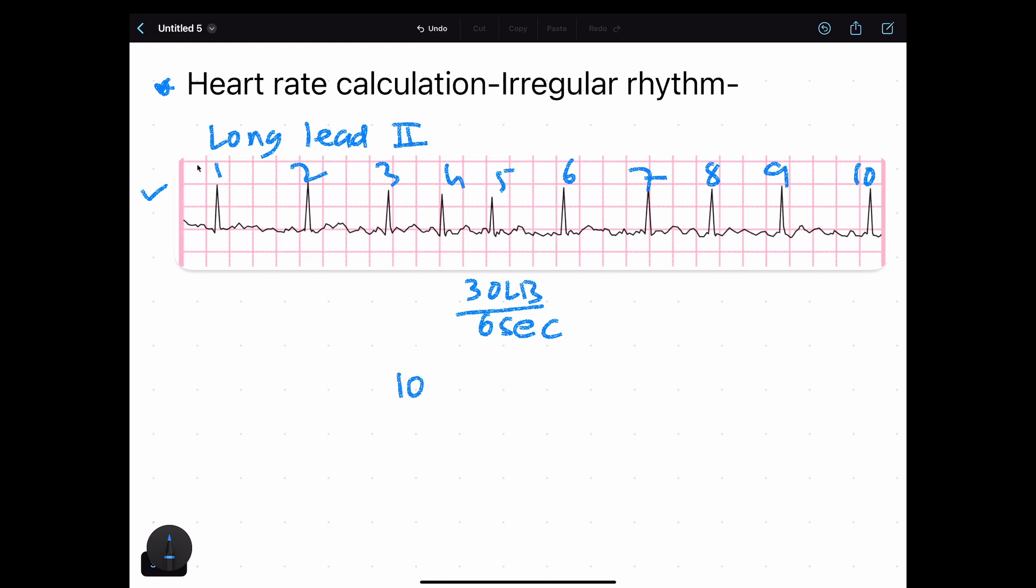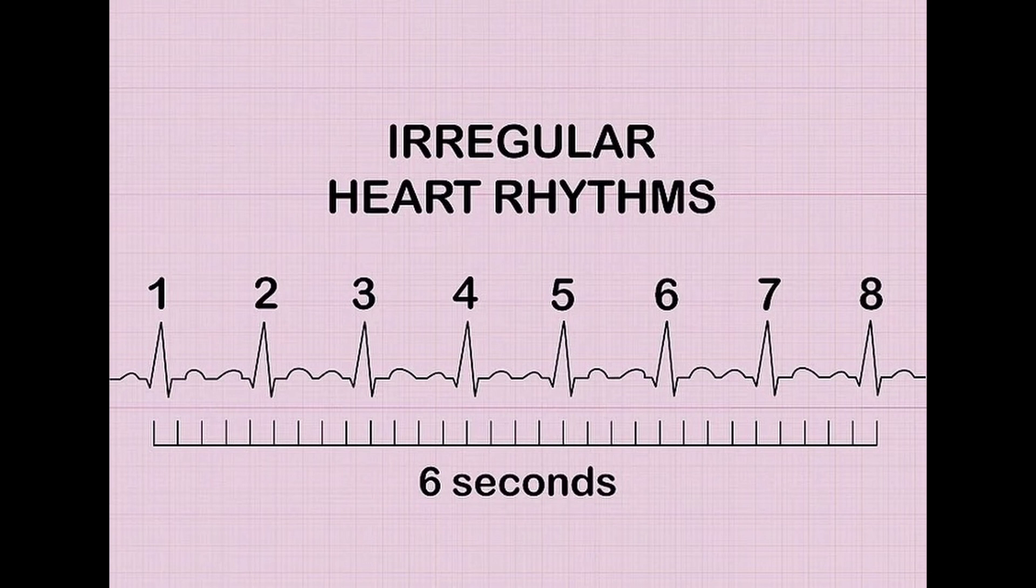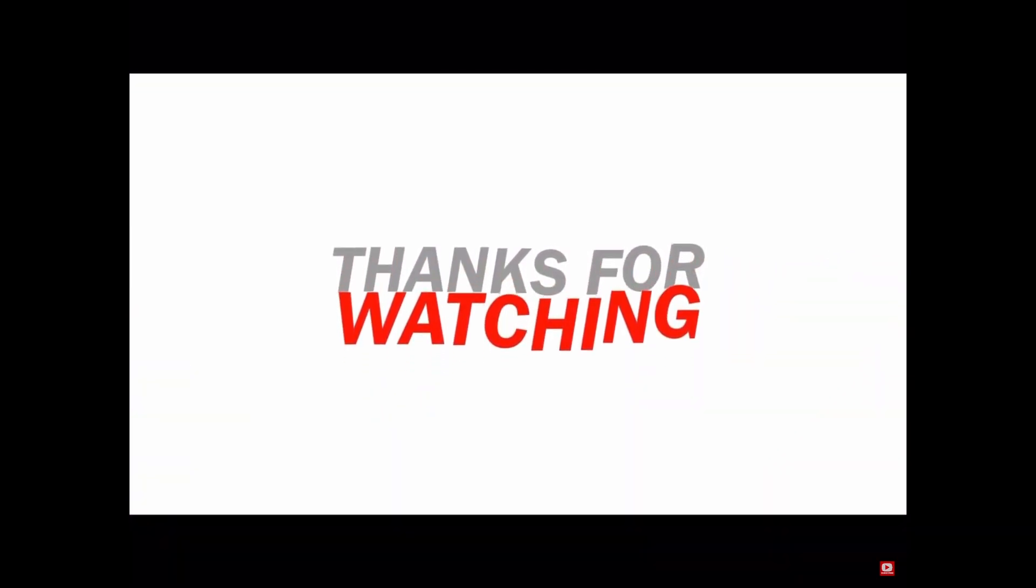So simply multiply this 10 by 10, then the heart rate will be 100 per minute. This six-second method is fast but only gives a heart rate in multiples of 10. Thanks for watching, hope you learned from this video.